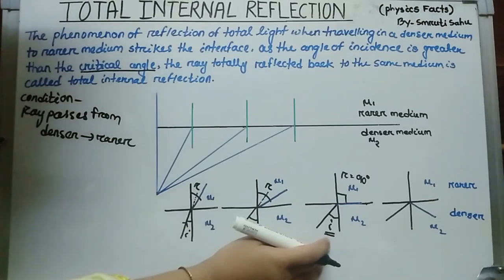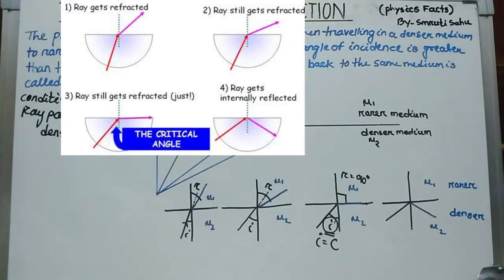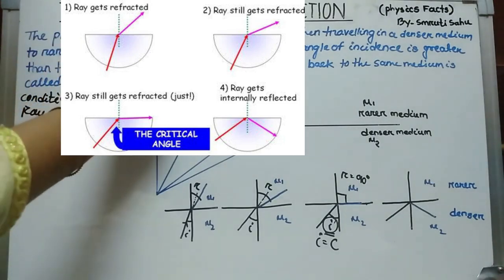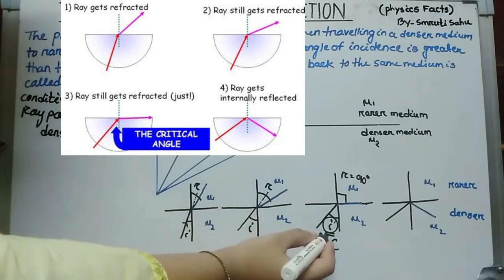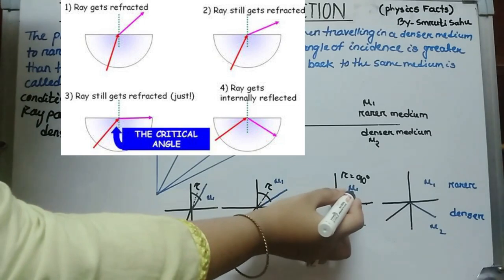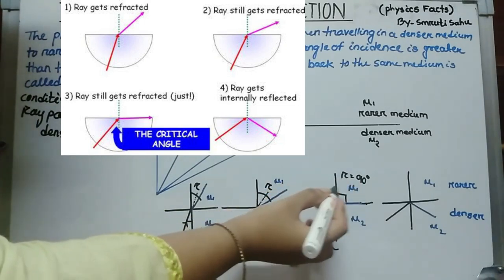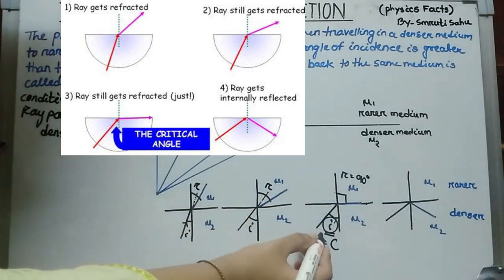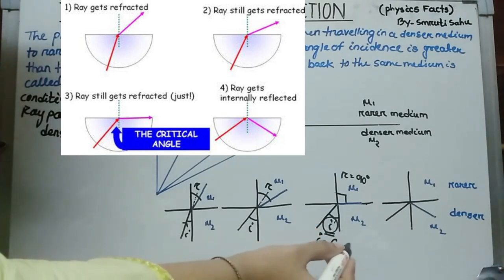In that condition, that angle of incidence is called the critical angle. The critical angle is the angle for which the angle of refraction is 90 degrees in the rarer medium. So that angle of incidence in the denser medium is called the critical angle.